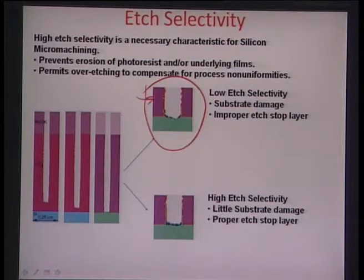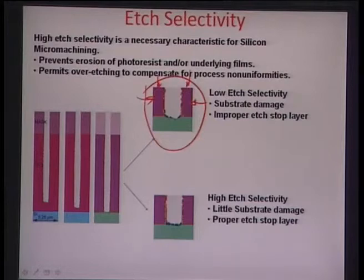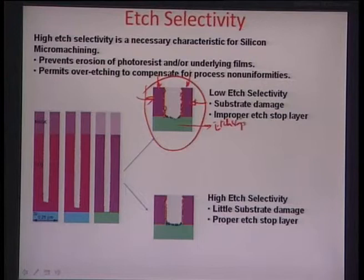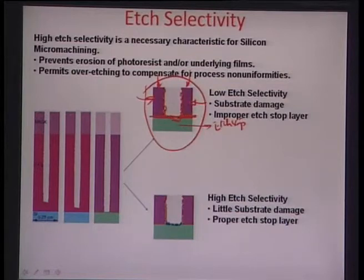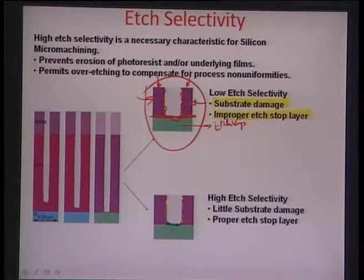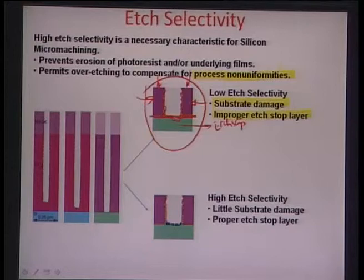Low etch selectivity is illustrated where an agent eats away material on the sides and the etching does not stop at the intended etch stop layer, causing substrate damage and non-uniformities in realized features and sizes. High etch selectivity, on the other hand, produces a more uniform post-etching profile with little substrate damage and a proper etch stop — giving better control over the etching process.